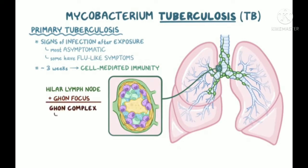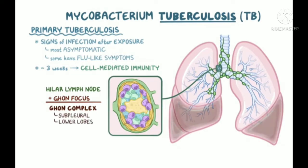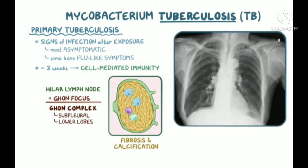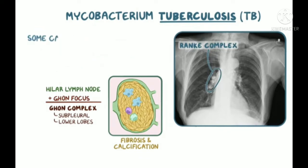Ghon complexes are usually sub-pleural and occur in the lower lobes of the lungs. The tissue encapsulated by the granuloma undergoes fibrosis and often calcification, producing scar tissue that can be seen on x-ray. This calcified Ghon complex is called a Ranke complex. In some cases, although a scar is left over, the mycobacteria are killed off by the immune system, and that's the end of that.